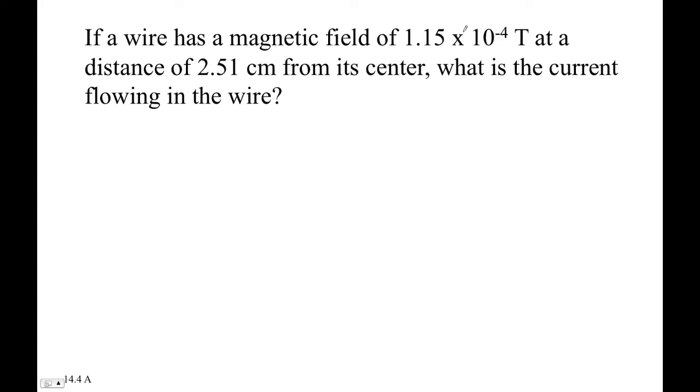Okay, so let's see. If a wire has a magnetic field of 1.15 times 10 to the minus 4th teslas at a distance of 2.51 centimeters from its center, what is the current flowing in the wire?